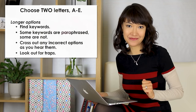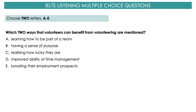Here is the question. Which two ways that volunteers can benefit from volunteering are mentioned? Options: A — learning how to be part of a team; B — having a sense of purpose; C — realising how lucky they are; D — improved ability at time management; E — boosting their employment prospects. Now please listen to the recording and find two correct answers.